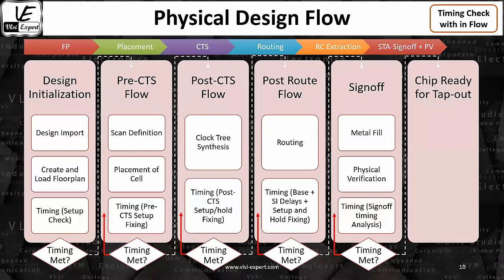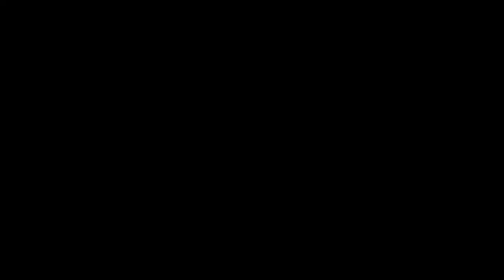So this is a very simple flow — the physical design flow. Whatever you are doing on the back-end side, you can do the timing analysis, and you have to fix any violation. We will discuss each and every thing in detail: the pre-CTS challenges and how to fix them, post-CTS violations and how to fix them with different methods, post-route items, and how metal fill is going to affect things. Everything will be discussed in this course. The point is, this is basically a timing check flow on the back-end side.